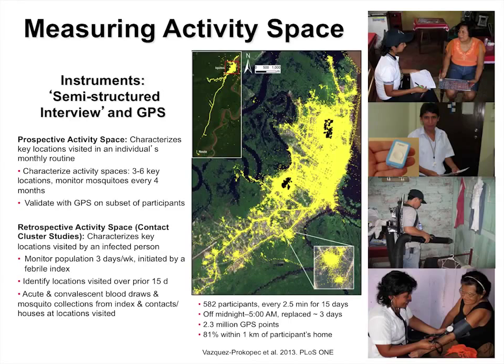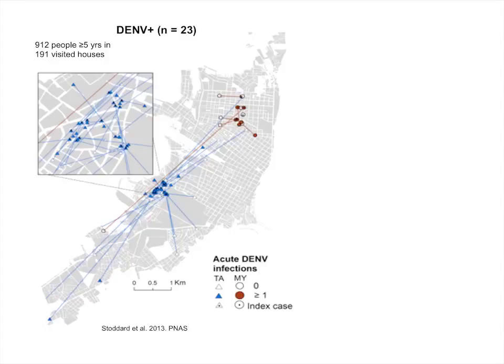Then we did something we called retrospective activity space. We have about 5,000 people we monitor three days a week — nurses go to their homes and ask if anybody has a fever. If so, we draw blood, and if it's dengue, we come back and ask: where did you go in the last two weeks? Then we go to those places and draw blood from as many people as we can. This is called an activity space cluster — rather than limiting it to the area around where they live, we're looking at all the places they visited.